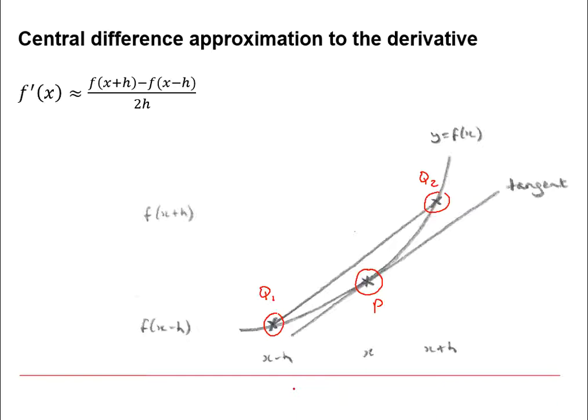As for the forward difference method, the distance up is going to be f of x plus h minus f of x minus h, so that's the distance from there to there. Now we've got a distance along of 2h.